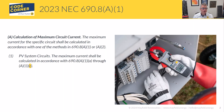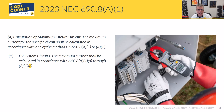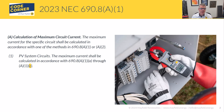Talking about this calculation of maximum circuit current, we are going to define the maximum circuit current by one of the methods in either 690.8A1 or 8A2. Today I'm just going to talk about 8A1 — we have separate videos on 8A2 and we'll talk more about it in the future — but today we're just going to focus on A1, which has multiple subparts that we'll break down.